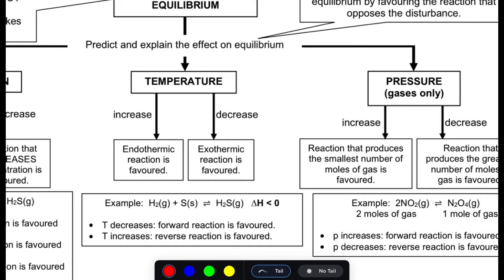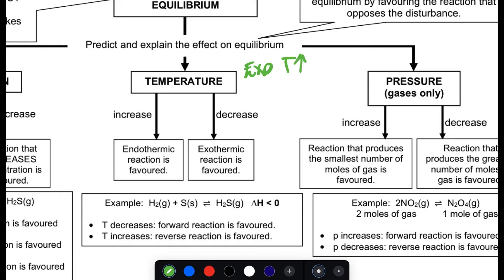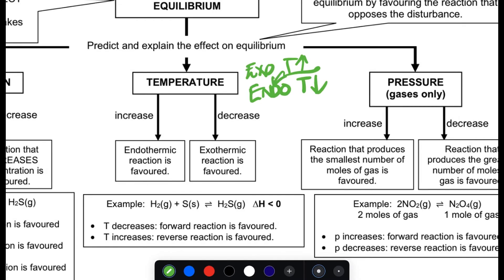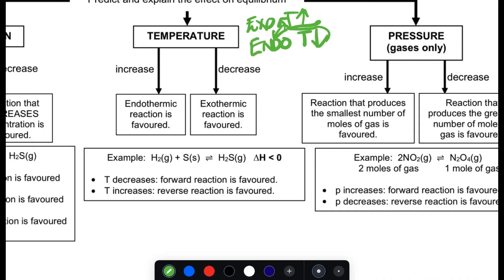Now let's look at temperature. This is very important: when you increase the temperature, the endothermic reaction is favored. When you decrease the temperature, the exothermic reaction is favored. Don't confuse this — in chemical equilibrium, increase in temperature favors the endothermic side, and decrease in temperature favors the exothermic side.